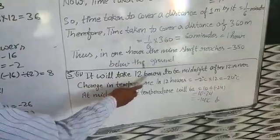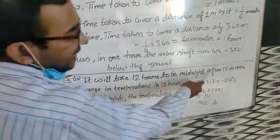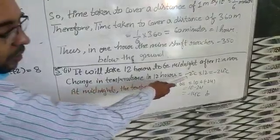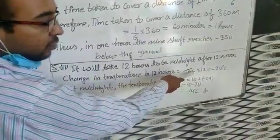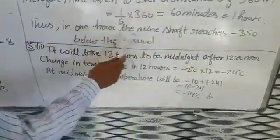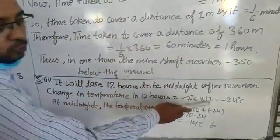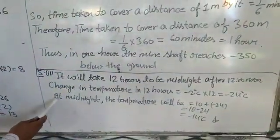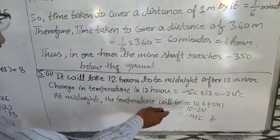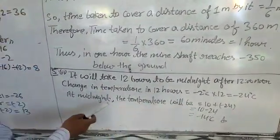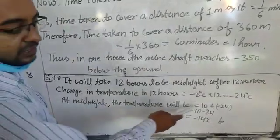For the second part of this question: it will take 12 hours to reach midnight after 12 noon. Change in temperature in 12 hours: minus 2 degrees Celsius per hour, multiplied by 12, gives minus 24 degrees Celsius. At midnight, the temperature will be 10 plus minus 24, because at noon the temperature is 10 degrees Celsius.